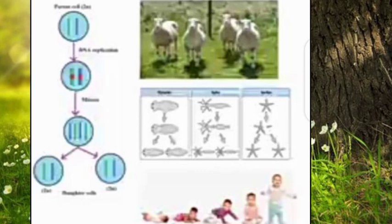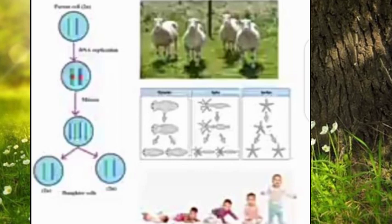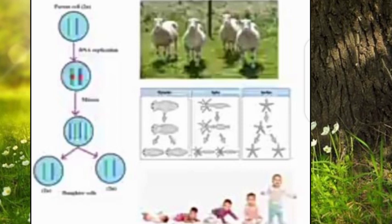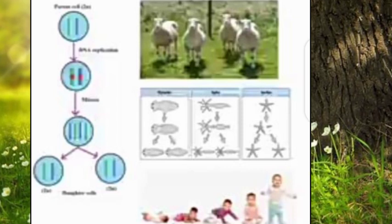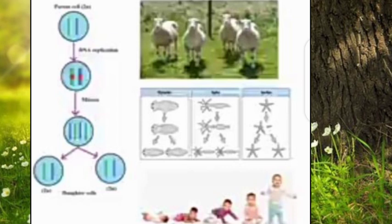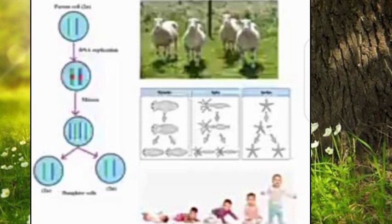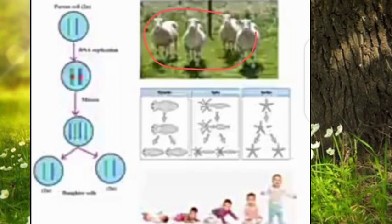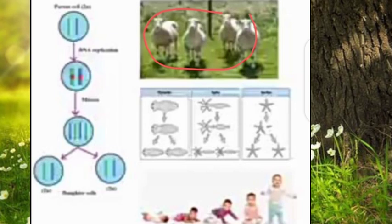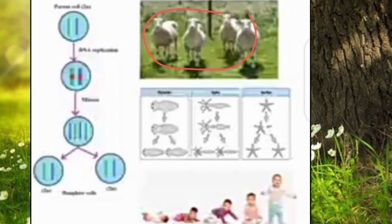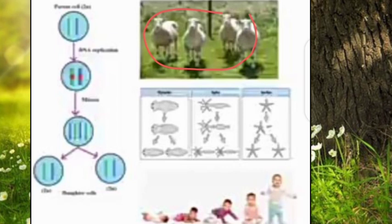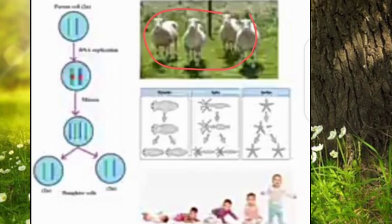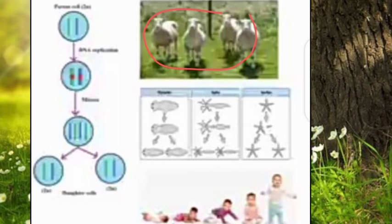Cloning utilizes the process of mitosis, in which cells from the parent when transferred to the daughter will have the same characteristics — all the Dolly sheep look alike. Some organisms undergo asexual reproduction, and for the process of asexual reproduction, mitosis is very important — for example in planaria, hydra, and starfish.